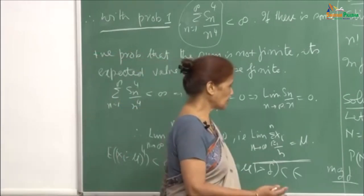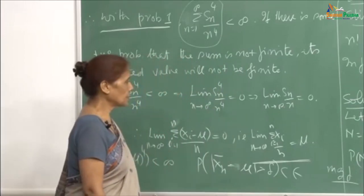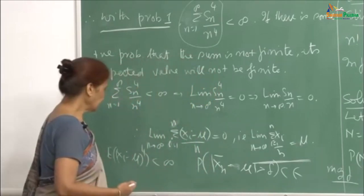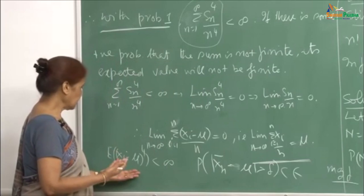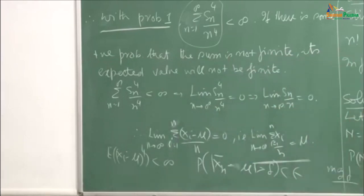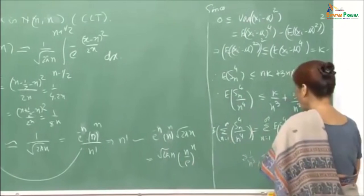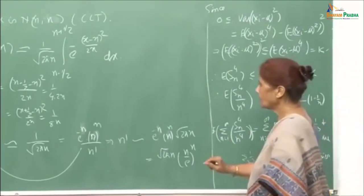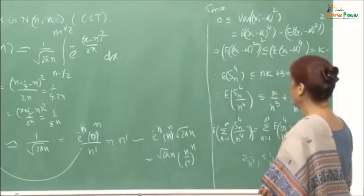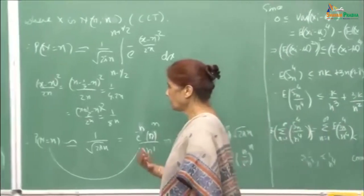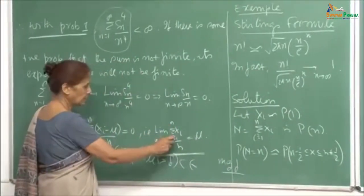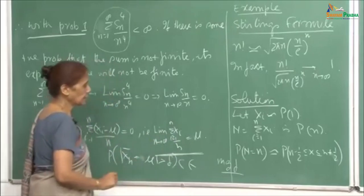Both the weak law and the strong law of large numbers hold. This proof has been given under the condition that E[(x_i - mu)^4] < infinity, and the conclusion is that x_bar_n converges to mu as n goes to infinity with probability 1 — a sure event.